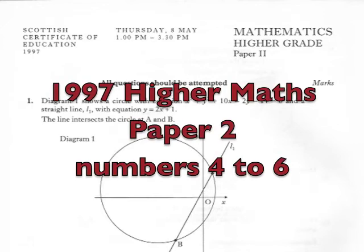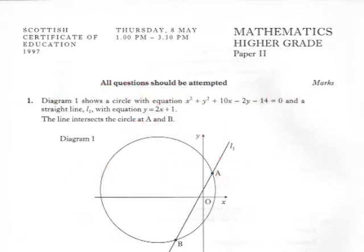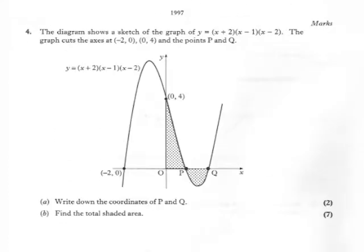Part seven of revision using the 1997 Higher paper, this time questions four to six. Starting with number four — pause and try it.